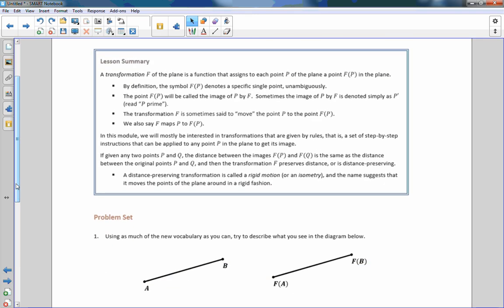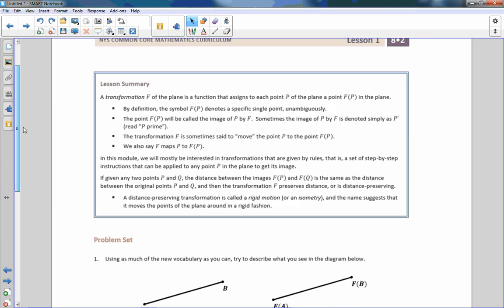So what a transformation F of the plane is a function that assigns each point P of the plane to a point F of P in the plane. So not much was discussed other than moving things around in this lesson, but this is read F of P and it just means the image of P where P was the pre-image. Okay. The original. So let's read that again. A transformation F of the plane is a function that assigns to each point P of the plane, a point F of P in that plane.